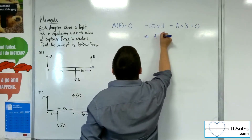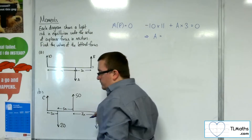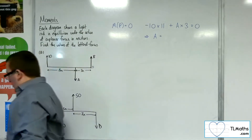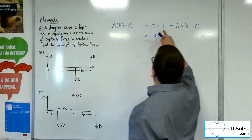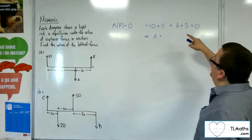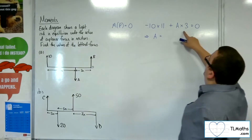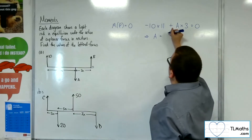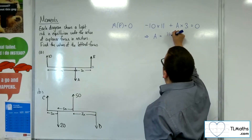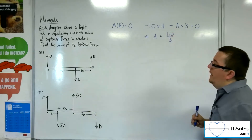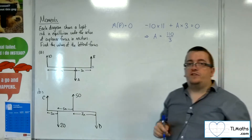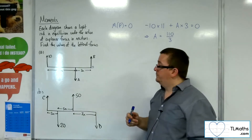Solving that equation: A equals 10 times 11 divided by 3, which is 110 over 3.